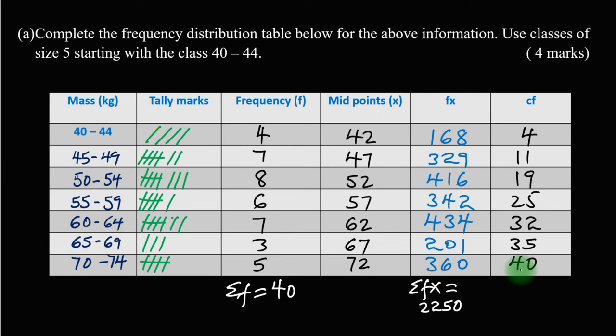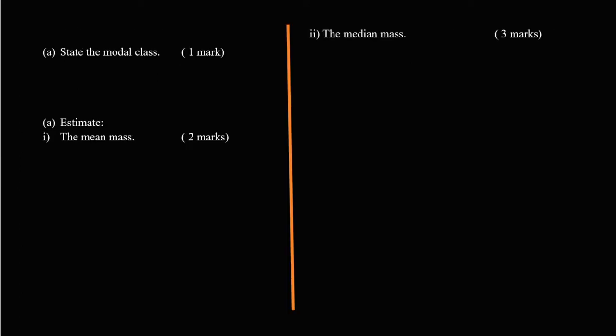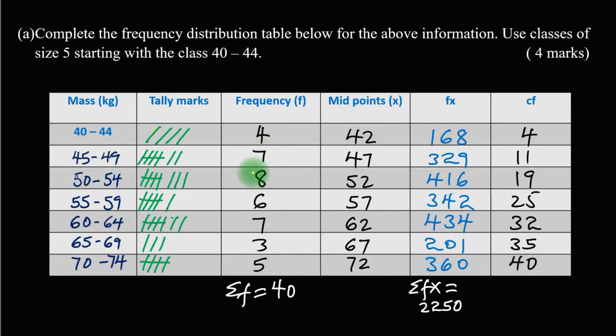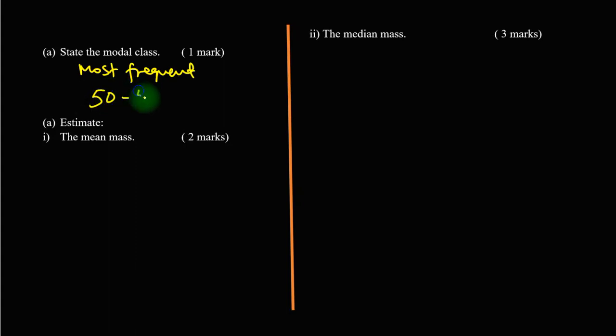Now we answer the next question: state the modal class. We need to know that the modal class is the most frequent data - the most frequent mass. We look at the frequency column for the frequency with the highest value. In our case, the modal class is 50 to 54 kilograms.